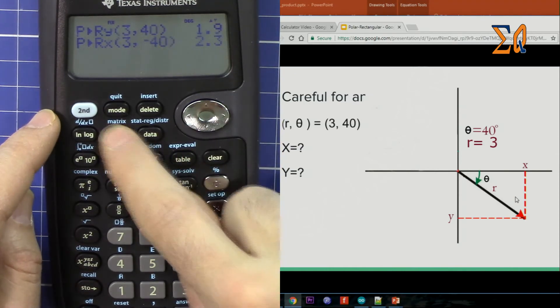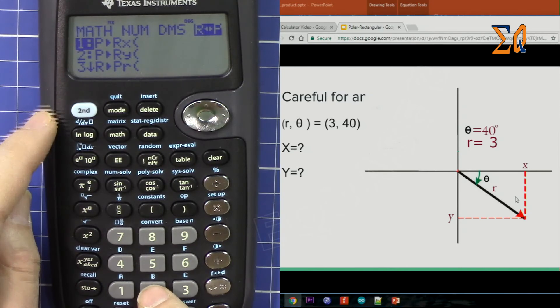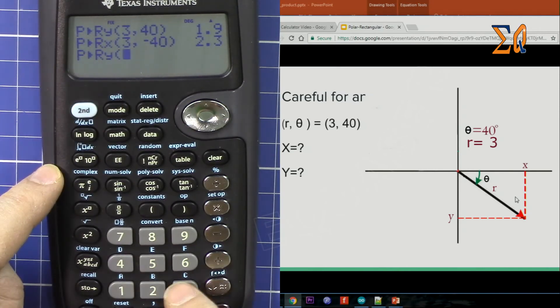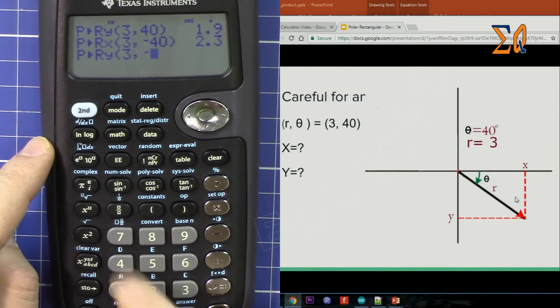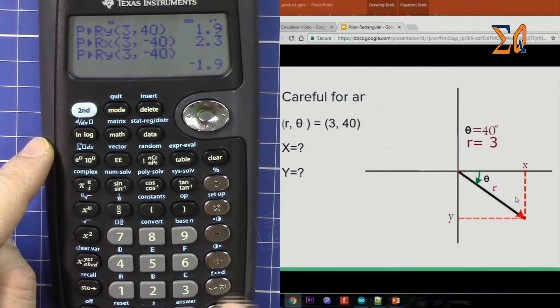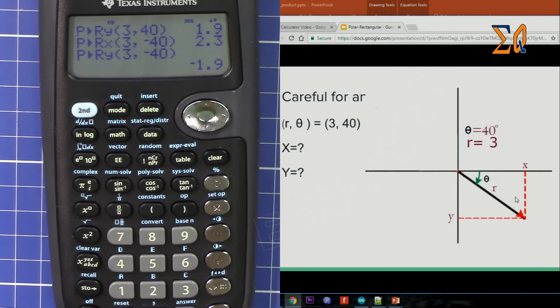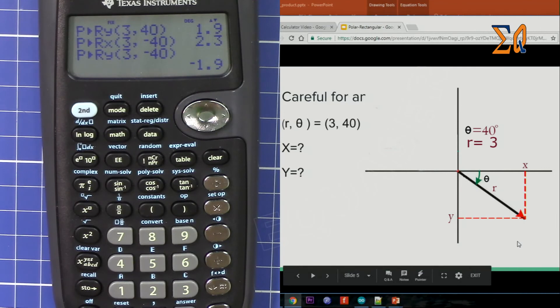2, because I want Y. So 3, second function, comma, minus 40. Now it gives you the correct answer of minus 1.9, which is lower, and that is the correct answer.